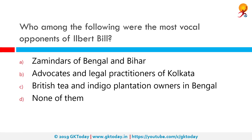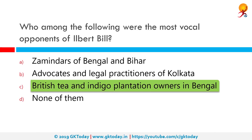Who among the following were the most vocal opponents of the Ilbert Bill? The correct answer is British tea and indigo plantation owners in Bengal. The Ilbert Bill was introduced in 1883 during the Viceroyship of the Marquess of Ripon, written by Sir Courtenay Peregrine Ilbert, the law member of the Viceroy's Council. According to this act, Indian judges could try Europeans.